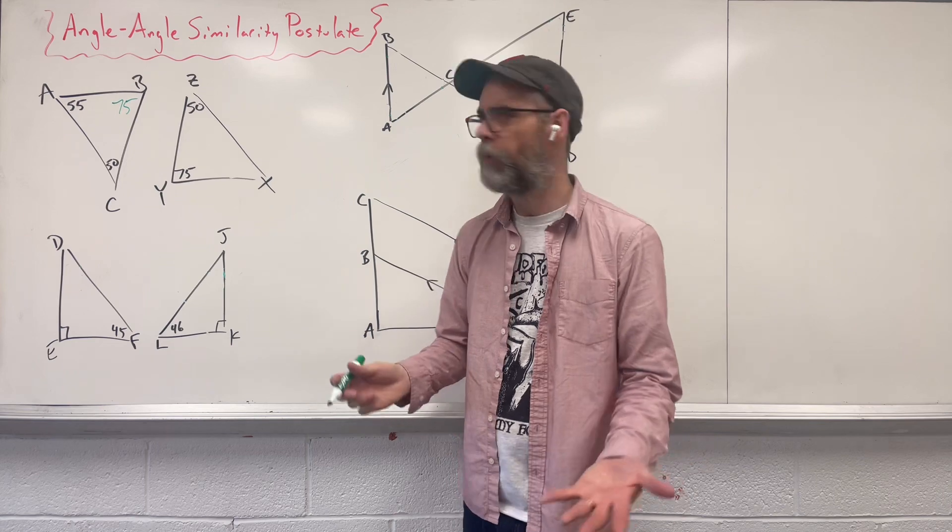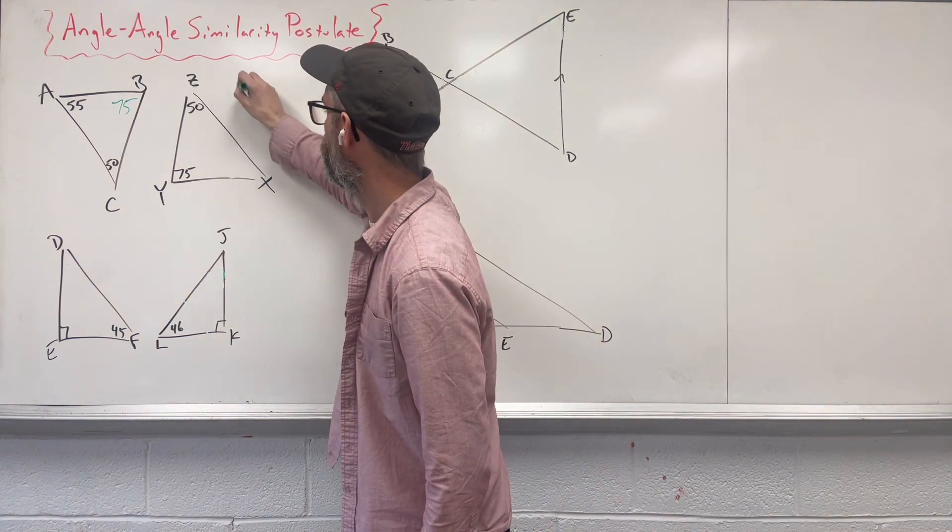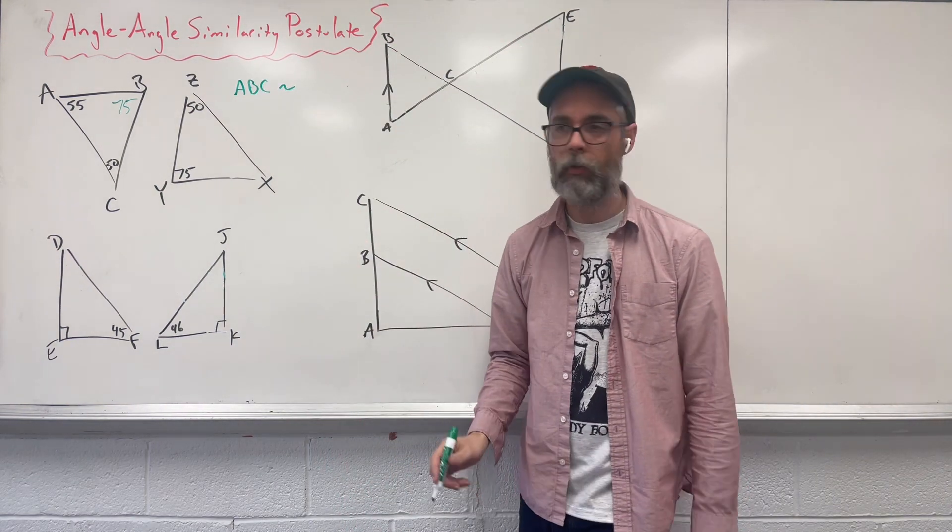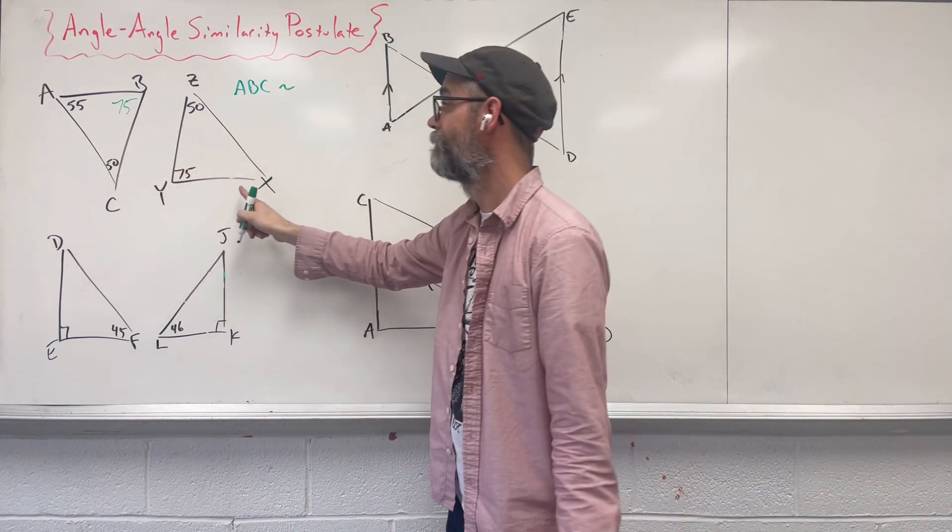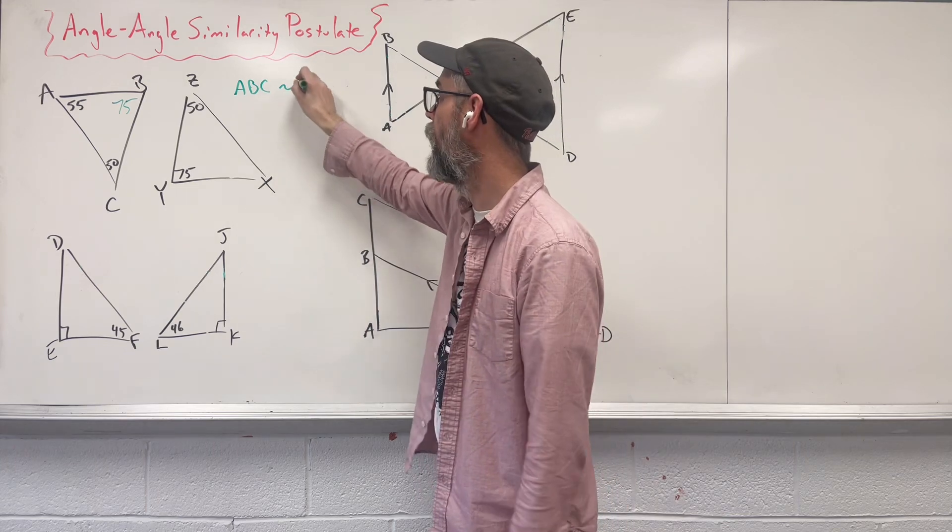So let's come up with a similarity statement. We're going to say triangle ABC is similar, that's just a little squiggle line. So what matches up with A? That's 55. Well, that's got to be this missing side over here, X.